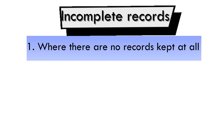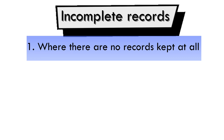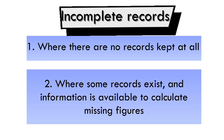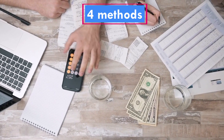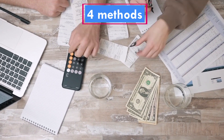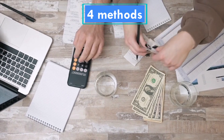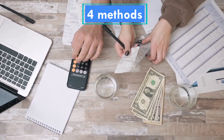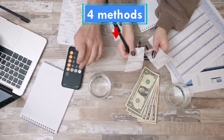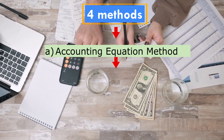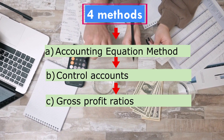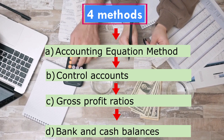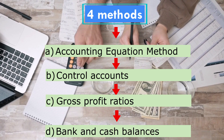Number one, where the accounting records are not kept at all. Number two, where some records exist and the information is available to calculate the missing figures. There are four methods that can be adopted to solve this problem depending on the nature of incomplete records: the accounting equation method, control accounts method, gross profit ratios method, and bank and cash balances method.